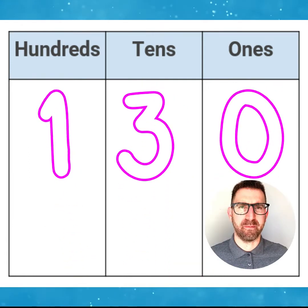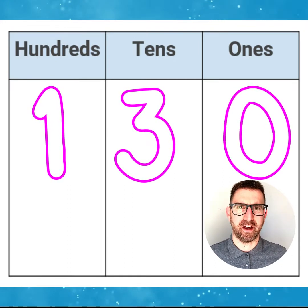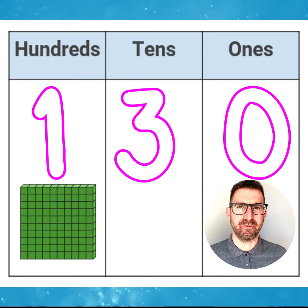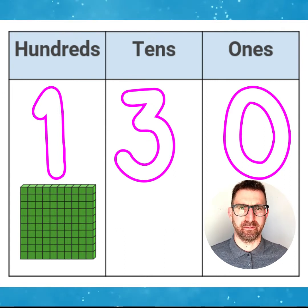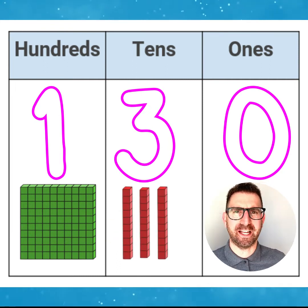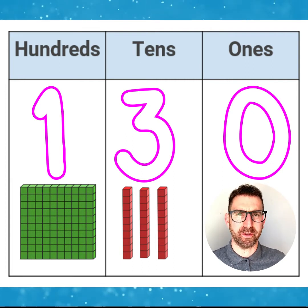Here we have the number 130. The value of the 1 digit represents 100 as it is in the 100's place value column. We would need only 1 hundred flat to represent this. The value of the 3 digit represents 30 as it is in the 10's place value column. We would need 3 ten rods to represent this. There are no 1's in this number so it remains a 0, with no 1 cubes needed.